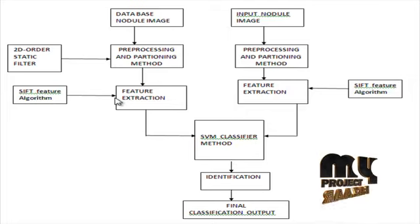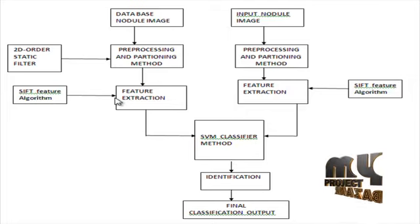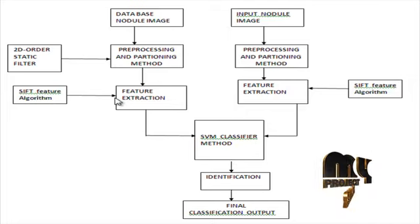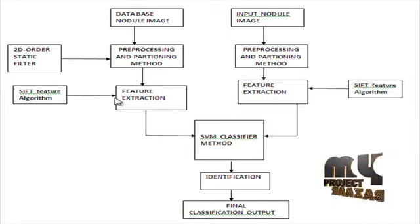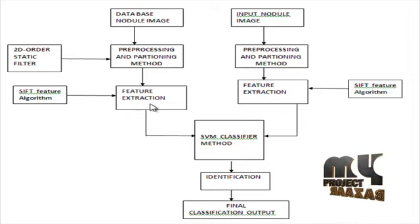Since the shapes of the extracted patches are not uniform, we select the smallest rectangle sub-window to cover all pixels for each patch, then run SIFT on this window.